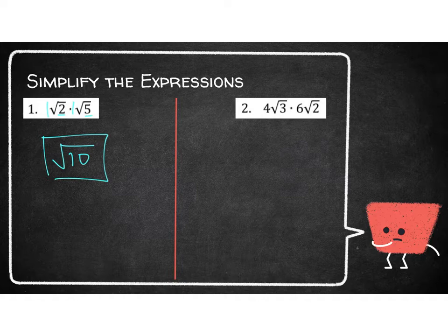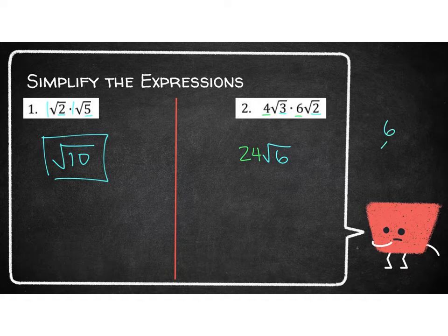Let's take a look at number 2. I've got the outsides of 4 and 6 — that gives me 24 when I multiply those together. And then on the inside, I have 3 times 2, which is 6. So I have 24 root 6. 6 cannot be broken down at all because 6 is just 3 and 2, and there's no pairs there. So 24 root 6 is your expression.